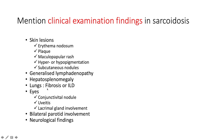We'll talk about the radiological classification later. Sarcoidosis can also involve the eyes, causing conjunctival nodules, uveitis, and lacrimal gland involvement, as well as bilateral parotid enlargement and a host of neurological findings.